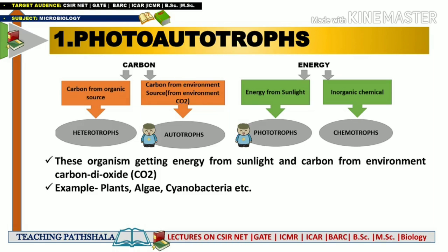Photo-autotrophs is made up of two words: phototrophs and autotrophs. Photo-autotrophs are those organisms which get their energy from sunlight and their carbon from environmental carbon dioxide. The best examples of photo-autotrophs are plants in the eukaryotic system, along with algae and cyanobacteria, among many more.